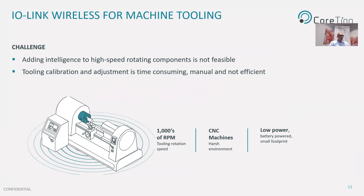In this next use case, IO-Link Wireless addresses the need for communication on very fast rotating devices in harsh environments. CNC, milling, or grinding machines rotate at very high speeds — thousands of rounds per minute — in extreme conditions with metal objects, interference, and fluids. Data collection is required from machine tooling to enable predictive maintenance, analytics, and machine optimization — not just when the machine is idle, but continuously while operating and rotating. Cable communication and traditional wireless technologies are simply not fit for this type of solution.